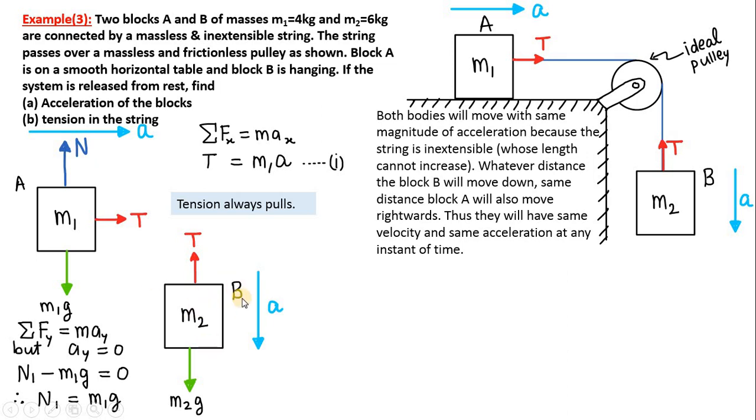Next, coming to block B. Block B doesn't move in the x direction - it moves only in the y direction - so we will take only one equation: Σ Fy = m ay. Now total force acting in the y direction: there are two forces, M2 G and T. Here confusion arises - shall we write Σ Fy as T minus M2 G or M2 G minus T? Which one is bigger? How do we decide that? So look at the direction of acceleration. Since block B is going down with acceleration a, therefore M2 G must be bigger than T. Then only M2 G will be able to pull it down with acceleration a.